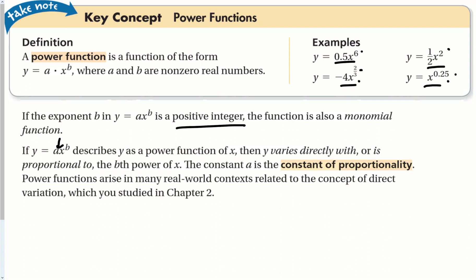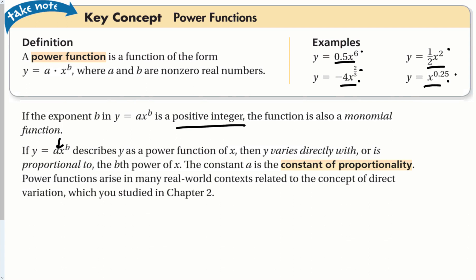The constant a is called the constant of proportionality instead of the constant of variation. A pair of these functions arises in many real-world contexts, very similar to direct variation. Let's try a word problem to see how it works.